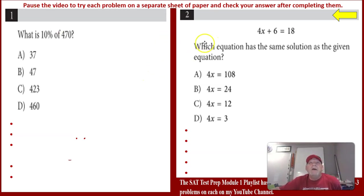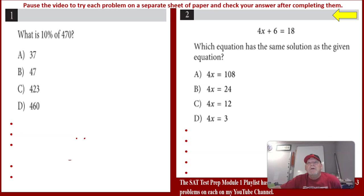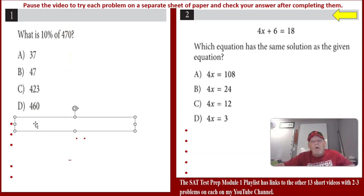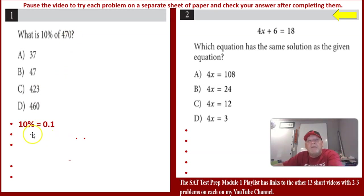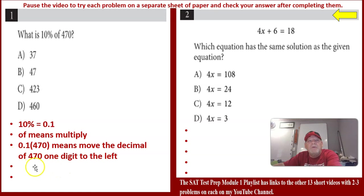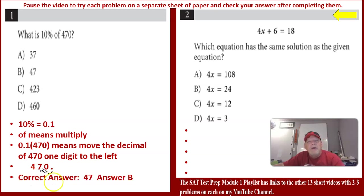Problem 1 is easy for some people. It simply says: what is 10% of 470? On some parts of the test you'll be able to use a calculator. You need to know how to change 10% to a decimal, which is 0.1. The word 'of' means multiply, so 0.1 times 470 — you move the decimal one place over — and the answer is 47, choice B.